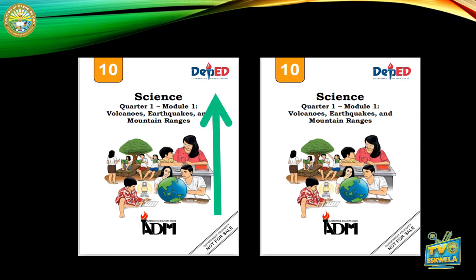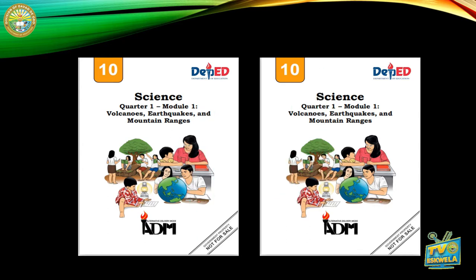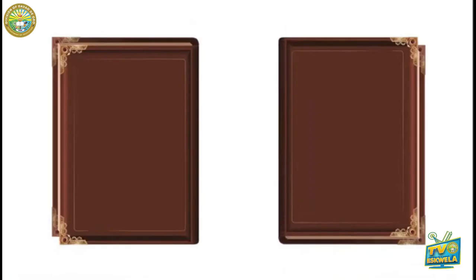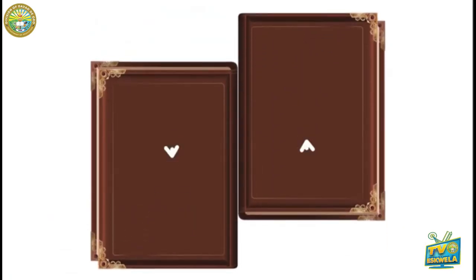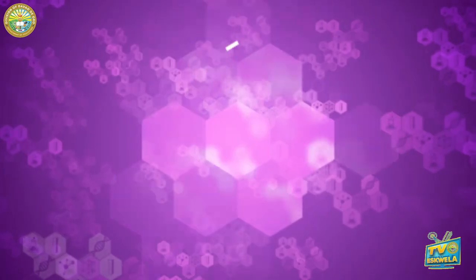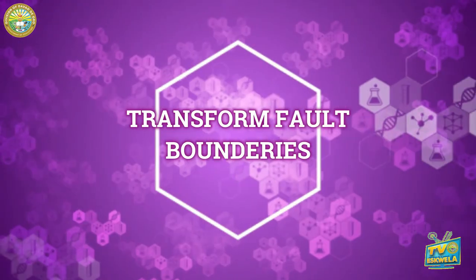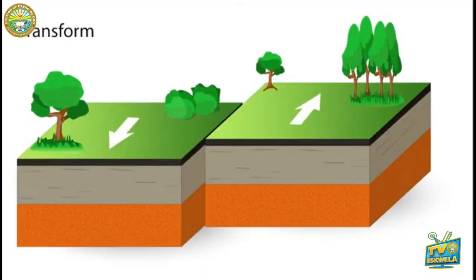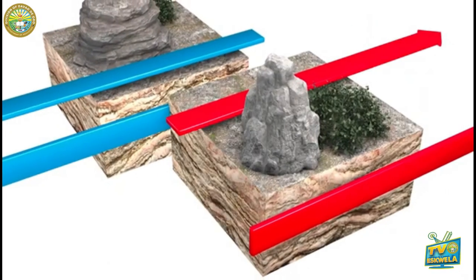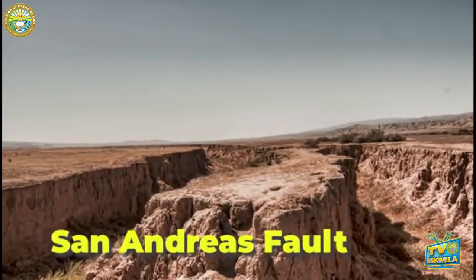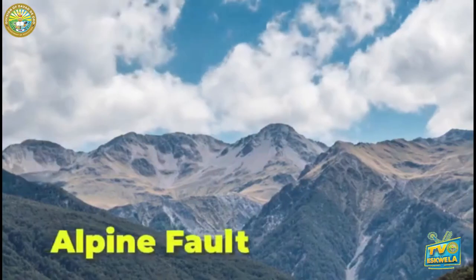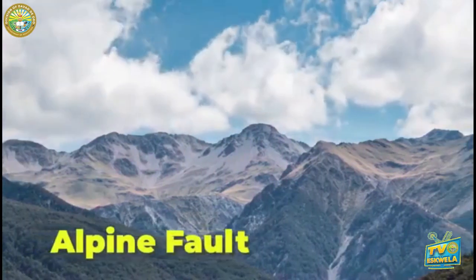Now imagine you and your sister sliding that module against each other up and down in an alternating motion. That's what a transform fault boundary looks like, also called a fault line. This boundary is more likely to create an earthquake. Examples of this boundary include the San Andreas Fault in California and the Alpine Fault in New Zealand.